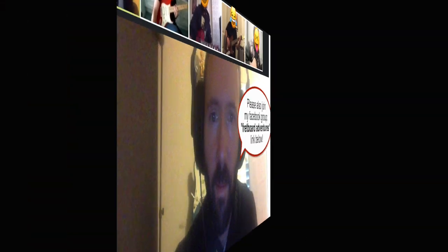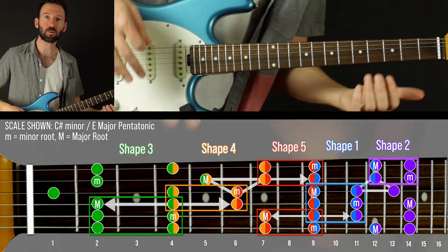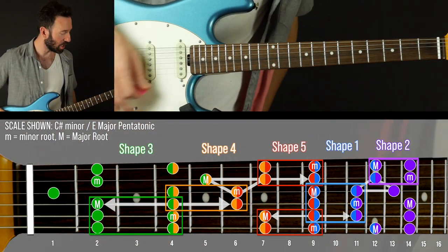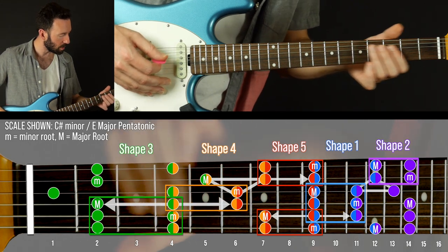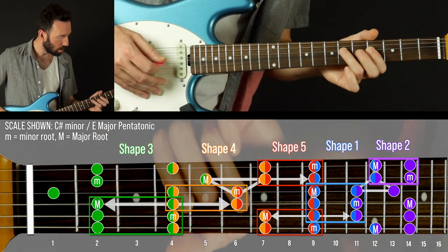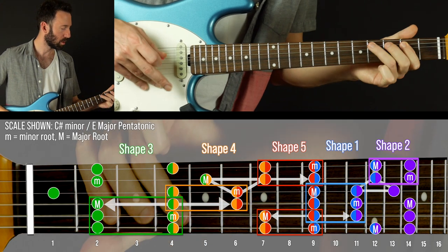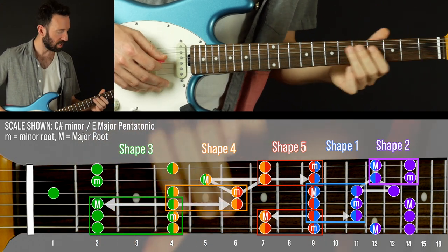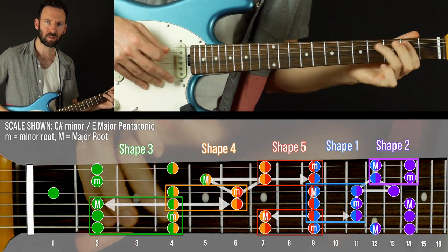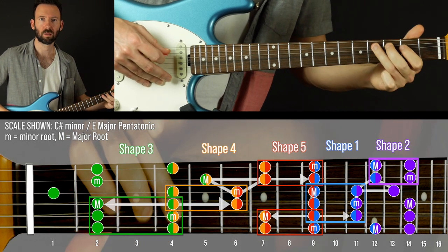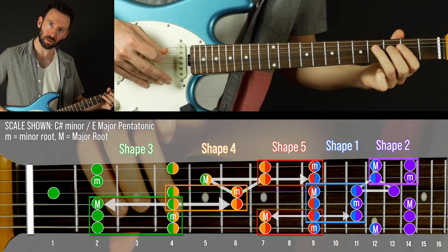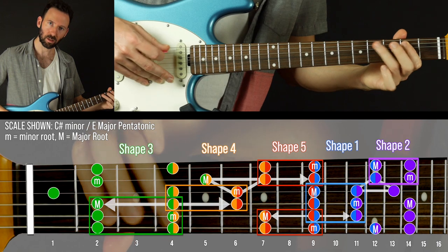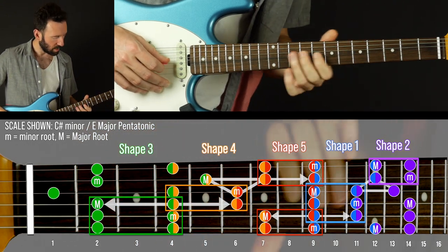All right, let's get back into this lesson. So you always have this as a way to smoothly connect the shapes. So here's just an example of me jamming. I'm going to start in shape four. See I just kind of went from this one using a backslide and then the next one.